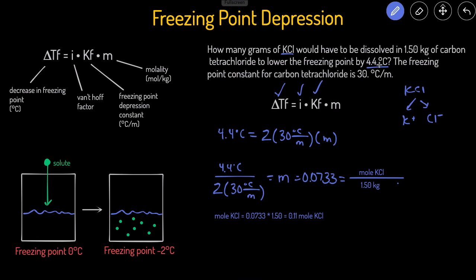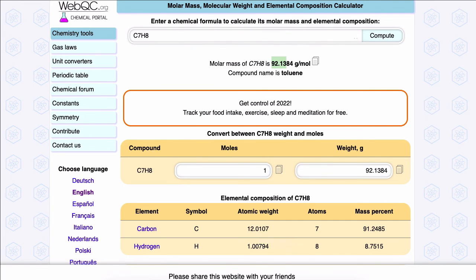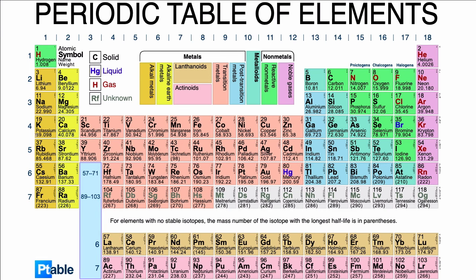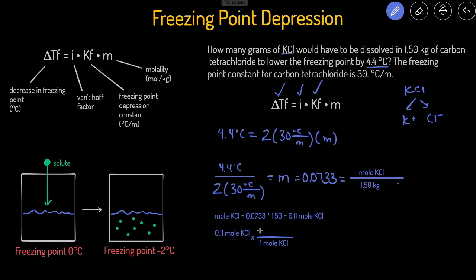Now that we have the moles, to get to the grams we multiply by the molar mass. So 0.11 moles of KCl multiplied by the molar mass of KCl — K's molar mass plus Cl's molar mass — gives 74.55 grams per mole. So 0.11 times 74.55 gives us 8.20 grams of KCl as the final answer.